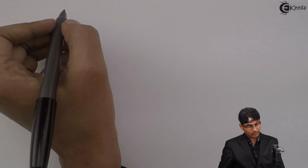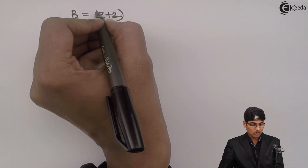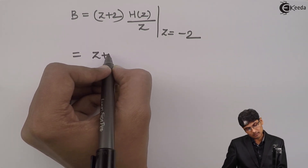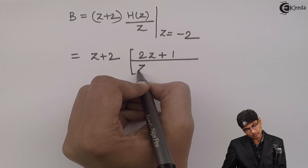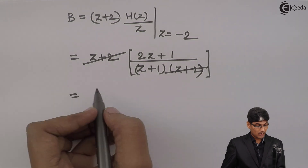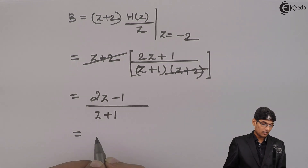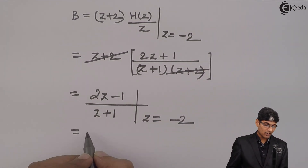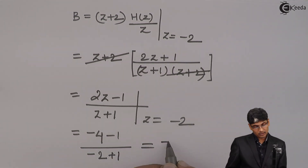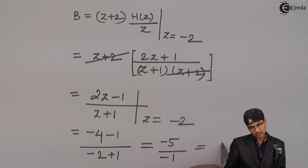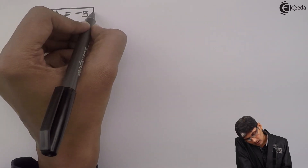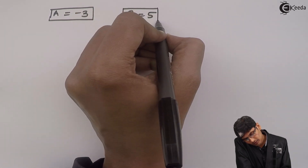To find constant B: B = (z + 2)·[H(z)/z] evaluated at z = -2. That gives (2(-2) - 1) / ((-2) + 1) = (-5) / (-1) = 5. So B = 5.